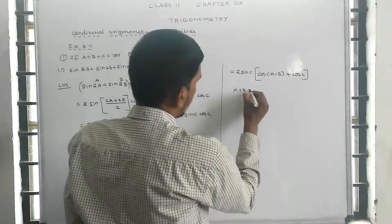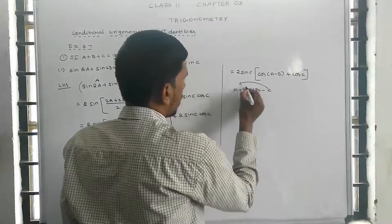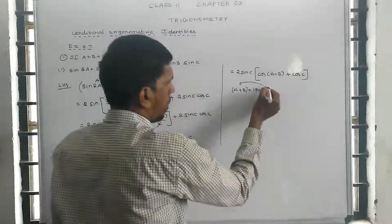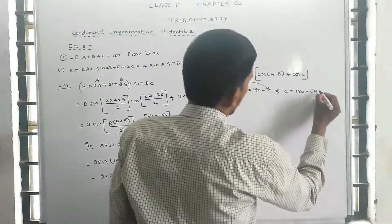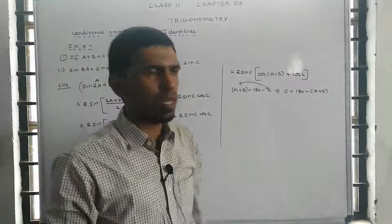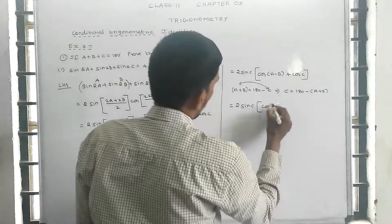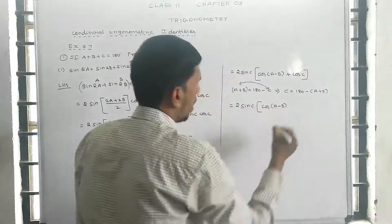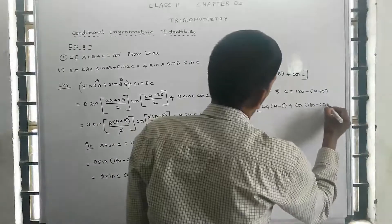With a + b = 180 - c, substituting c = 180 - (a+b), this becomes 2 sin c times [cos((a-b)/2) + cos(180 - (a+b))].